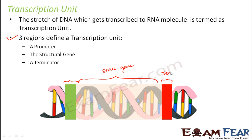The promoter denotes the beginning of transcription. The structural gene represents all those genes which will get transcribed — within this region, one strand of DNA behaves as the template strand and the other as the coding strand. Finally, the terminator region is where the process of transcription stops. This entire unit is known as the transcription unit.